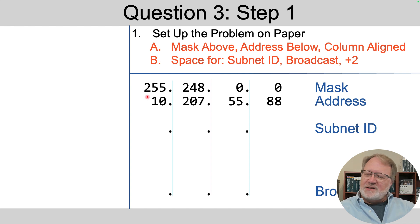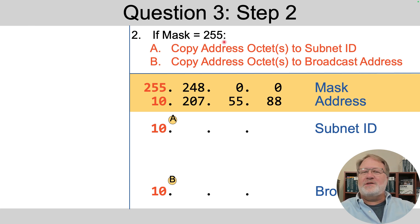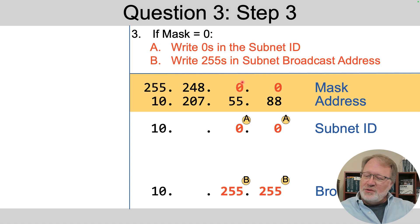Usual setup, dotted decimal mask, followed by the address, column aligned. So simple step one. Then for the octets for which the mask is 255, that's only octet one. In this case, we copied the address's value of 10 down below. In this case, we've got two octets where the mask value is zero. So in two octets, we write zeros in the subnet ID and 255s in the subnet broadcast address for the third and fourth octet, leaving only one octet left to figure out.